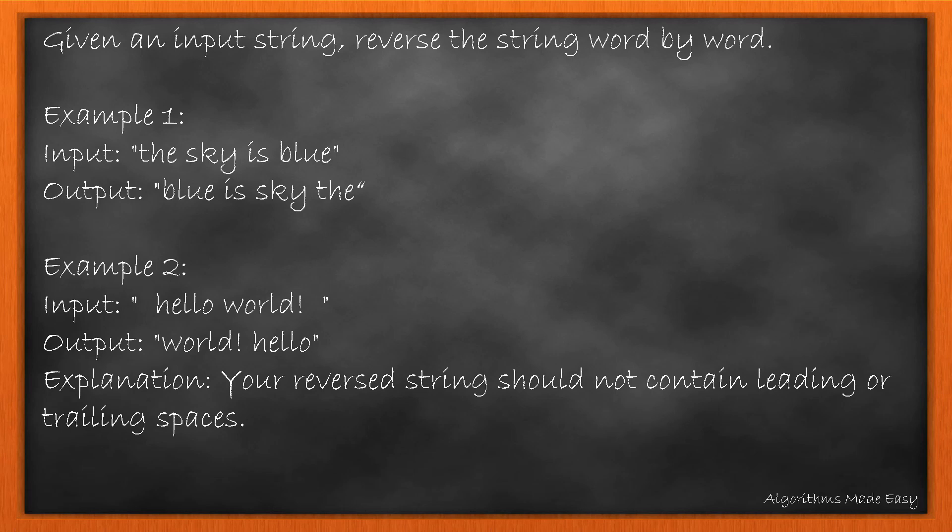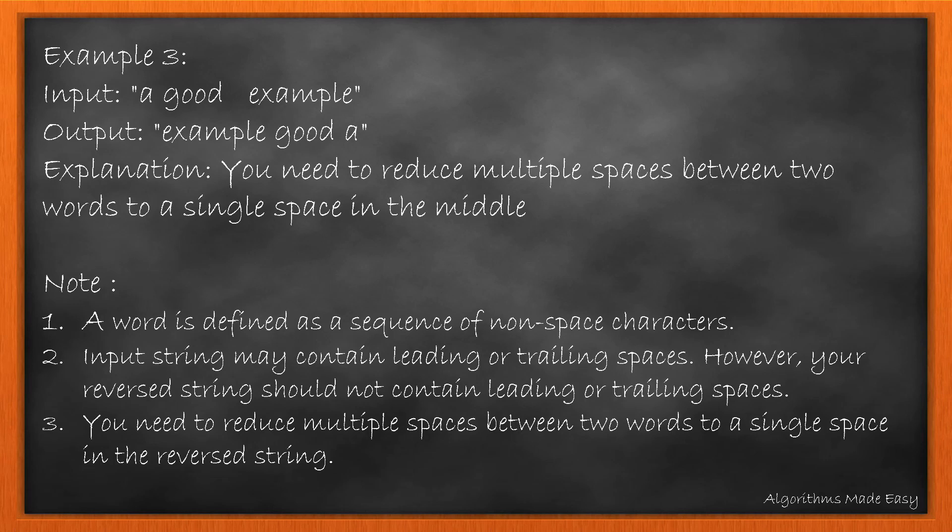Given an input string, we need to reverse the string word by word. While doing so, we need to keep in mind the extra leading spaces, trailing spaces and also the multiple spaces in between the words. For example 2, we can see that the output does not have any leading or trailing spaces. While for example 3, we can see that the output does not have multiple spaces in between as in input.